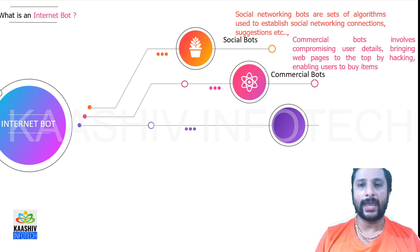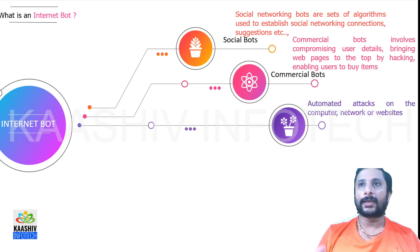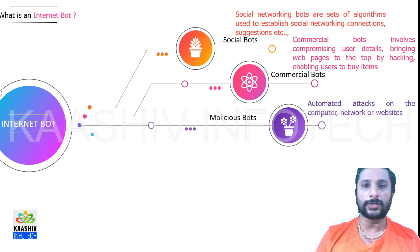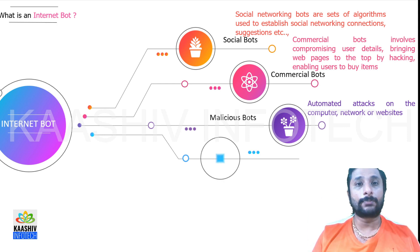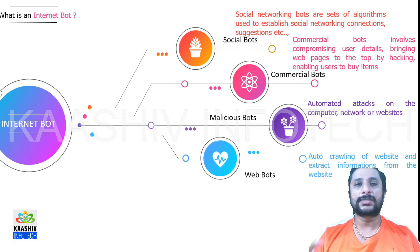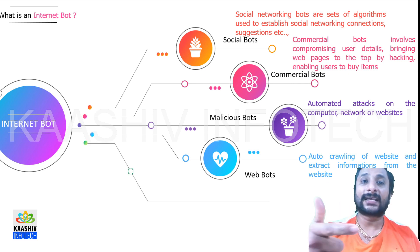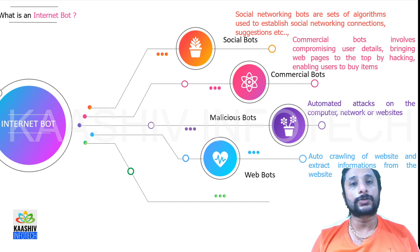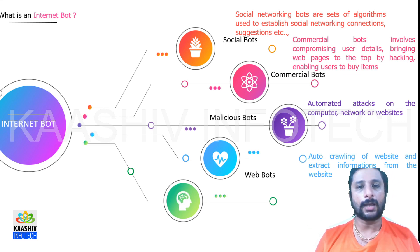Then we have commercial bots, used to push web pages to the top of search results. Hackers may place text in white color so it's invisible to humans but readable by the Google crawling engine — that is one form of commercial bot hacking. Another example is Amazon.com: when you buy an item, it automatically suggests other things you might want to buy. That is also a commercial bot.